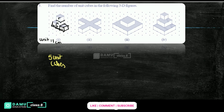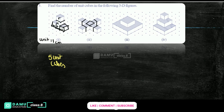Then second one — let's look at the second one. Here 1 centimeter. How many are we getting? This is 1, 2, 3, 4, 5, 6, 7, 8, 9. So totally how many we are getting? 9 unit cubes for the second one.